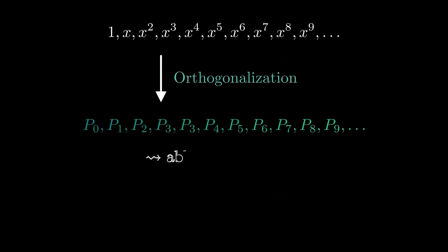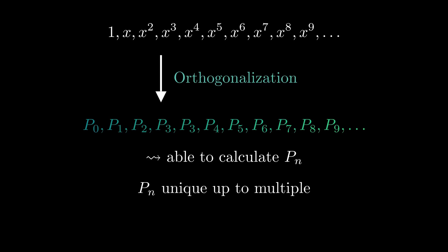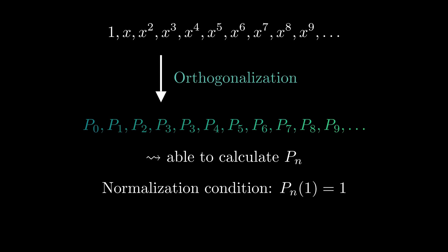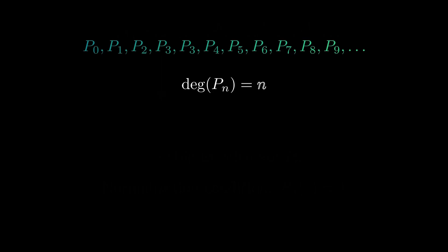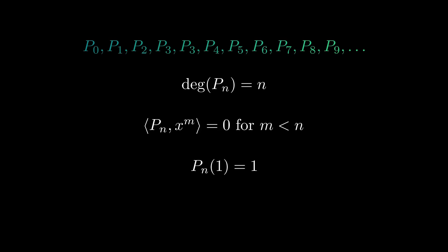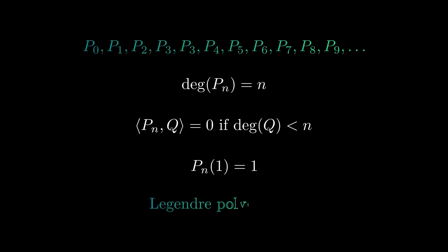The Gram-Schmidt process gives us a concrete process to solve our problem of finding a sequence of orthogonal polynomials. Notice, however, that these polynomials are not unique, as we can scale them by any constant. To fix this, we introduce the normalization condition that the value at 1 should be 1. With this condition, the sequence is unique. We constructed the polynomials pn such that pn has degree n, pn is orthogonal to x to the power of m where m is smaller than n, and the value of pn at 1 is 1. These properties uniquely determine the polynomials pn — we call them Legendre polynomials.